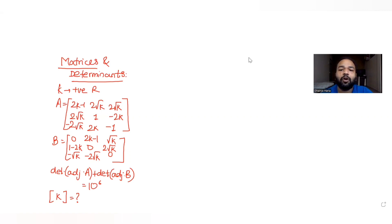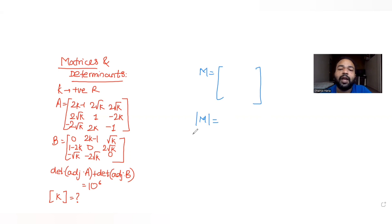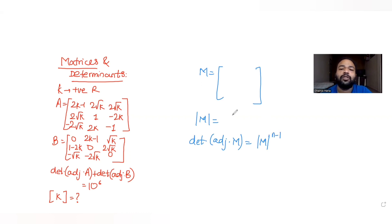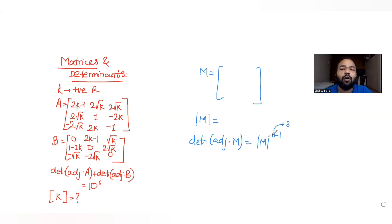Before solving, let's discuss the key idea. Whenever a matrix M is given, we can find the determinant of its adjoint using the formula: det(adj M) = det(M)^(n−1), where n is the order of the matrix. For a 3×3 matrix, n = 3; for a 2×2 matrix, n = 2.